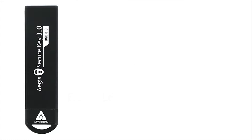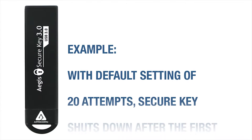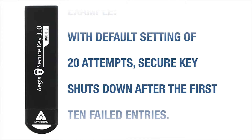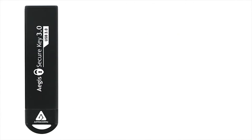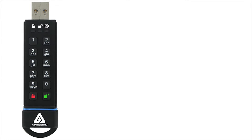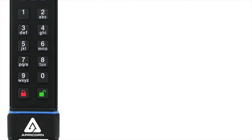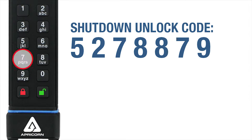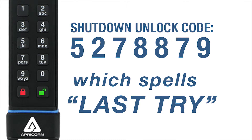There's a hitch to how these 20 attempts are allowed. Using the default 20 as our example, after 10 consecutive failed pin entries, the SecureKey will totally shut down and won't accept any key commands at all. To get to the second half — the other 10 attempts — you've got to enter this code to make any further pin entry attempts: 5278879, which just so happens to spell 'last try.'